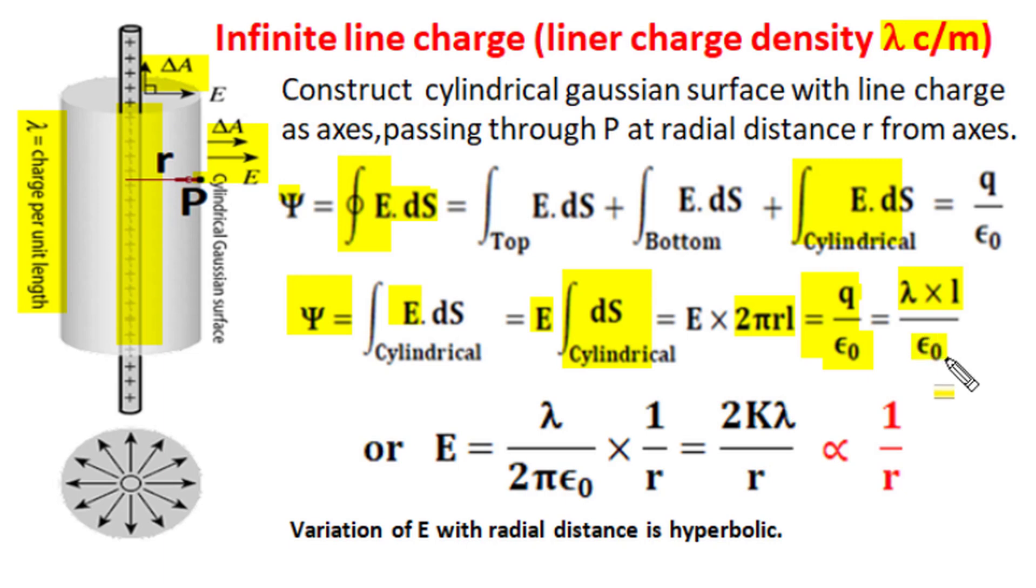Total enclosed charge divided by permittivity of air becomes the total flux coming out of Gaussian surface and it is electric field magnitude on surface multiplied by cylindrical surface area of Gaussian surface. The length l of cylinder and line charge is the same, get cancelled out, and simplification will fetch us electric field strength as lambda upon 2πε₀r.